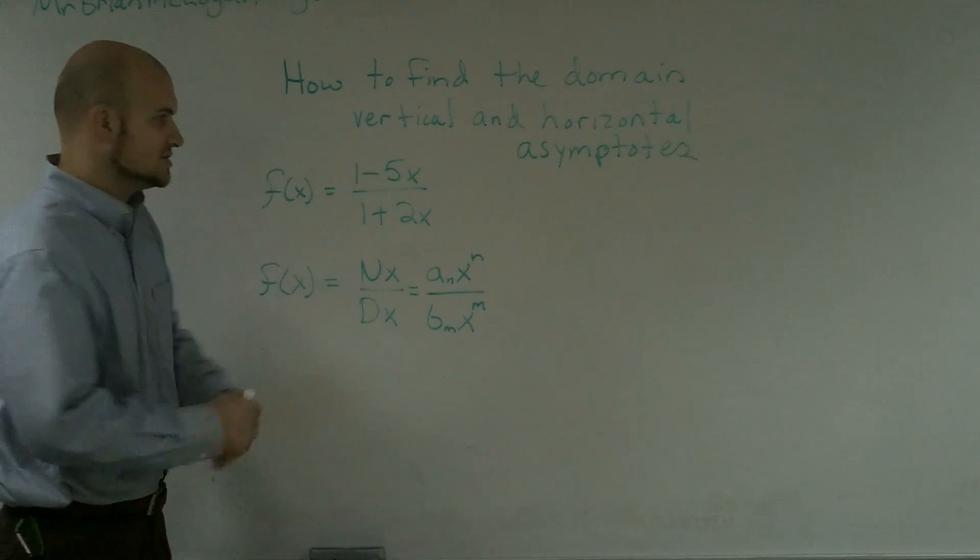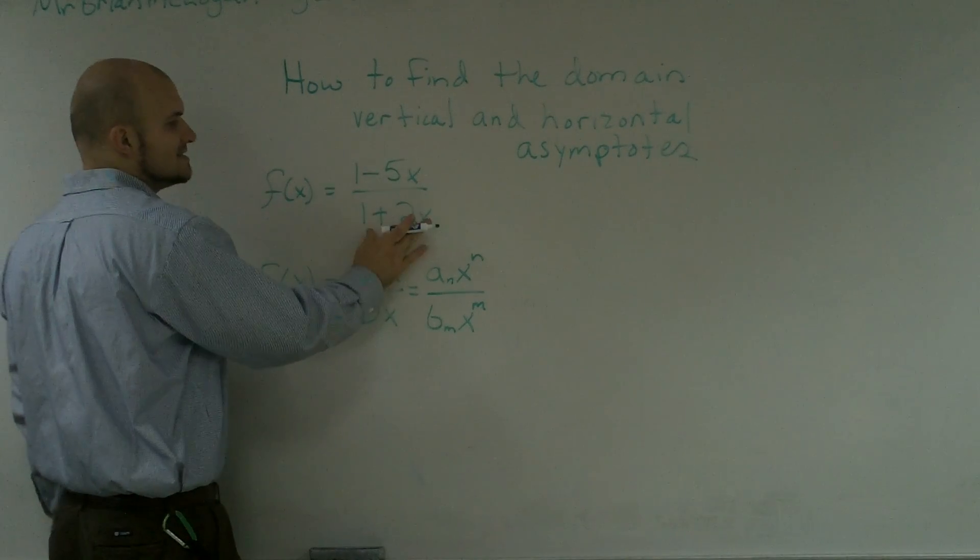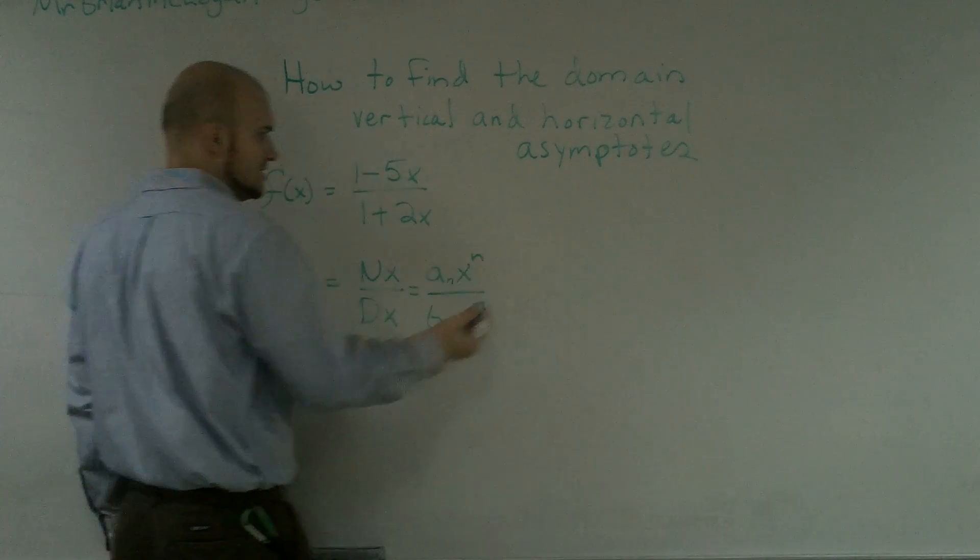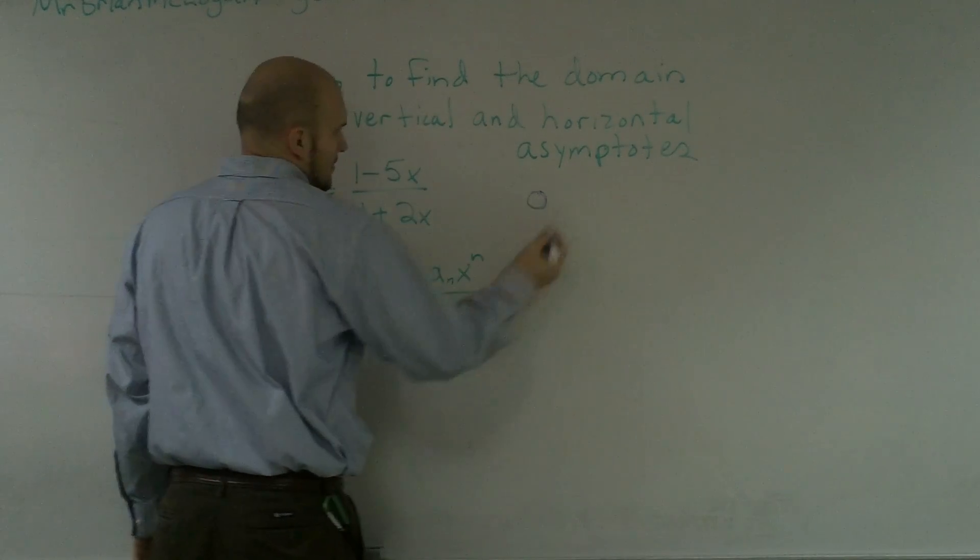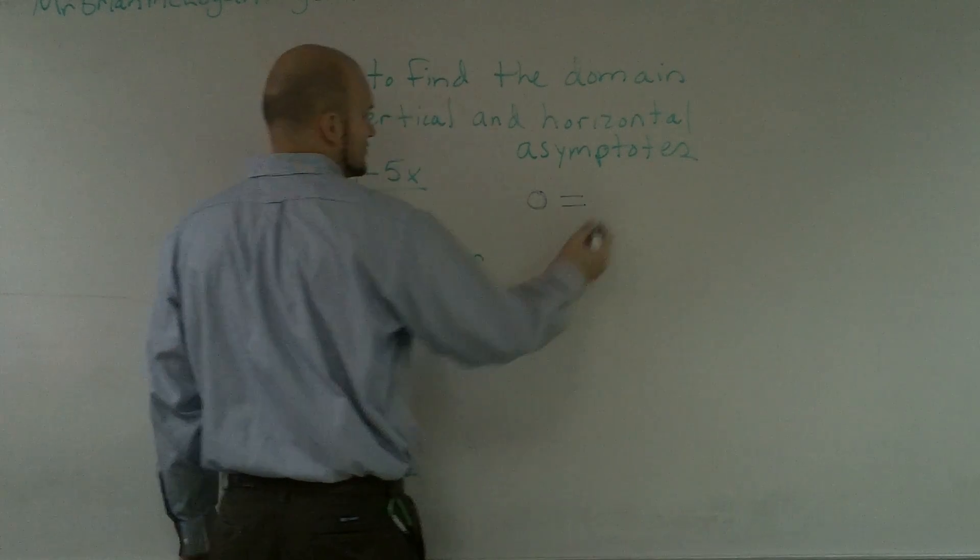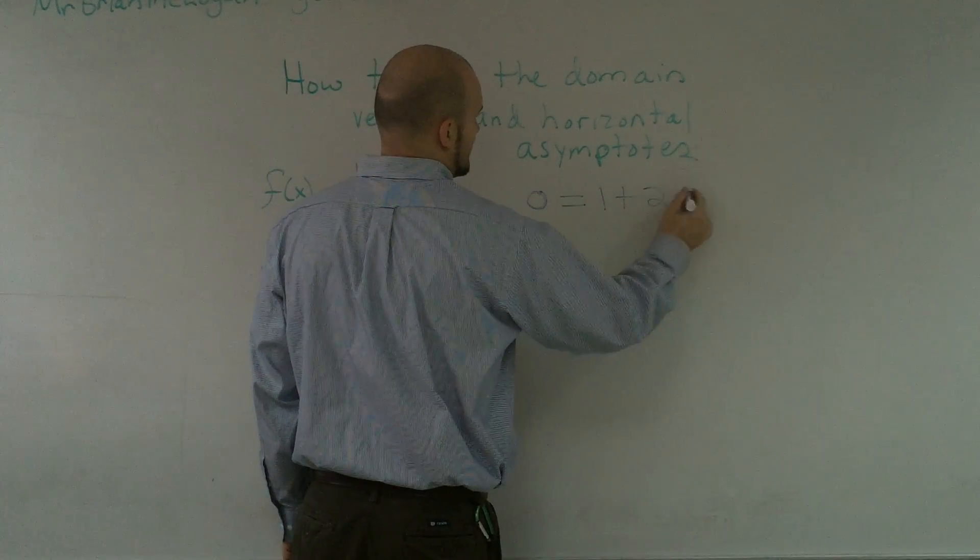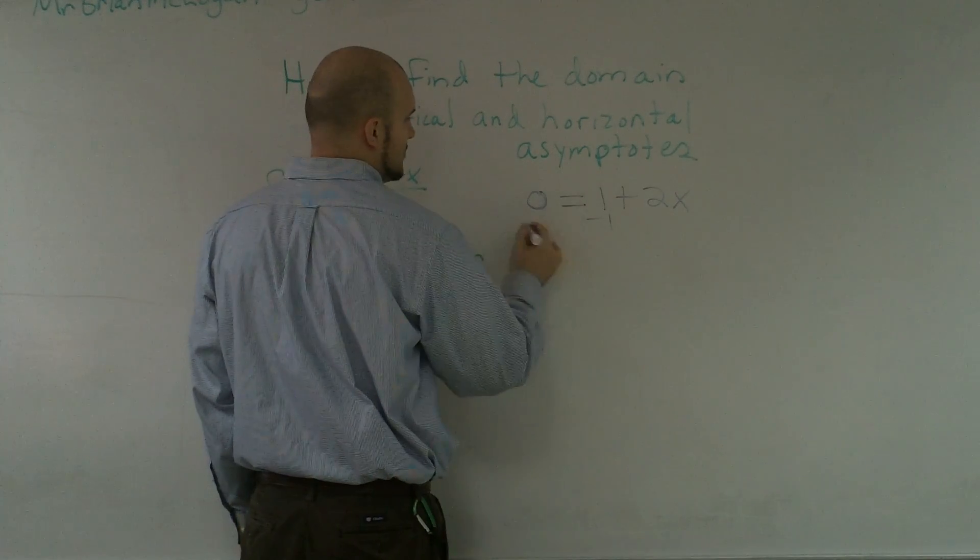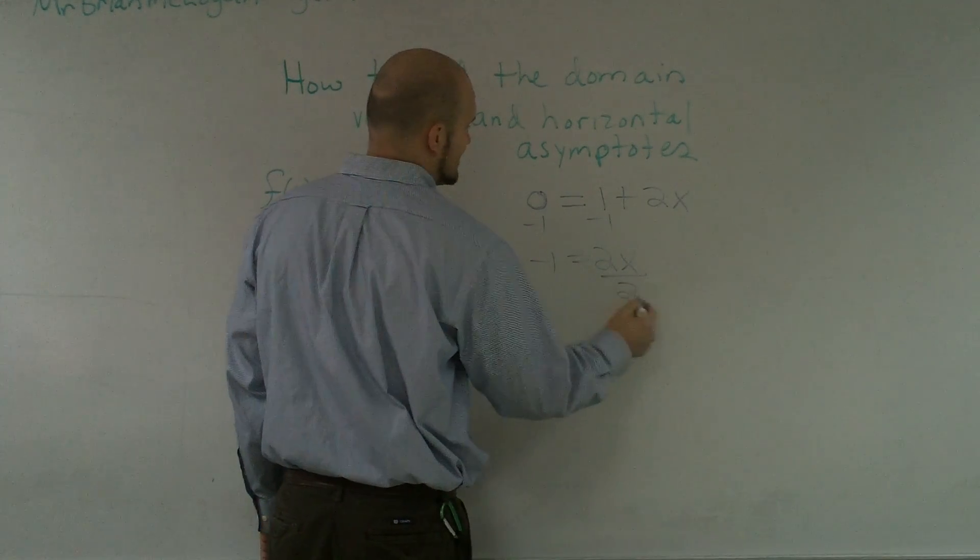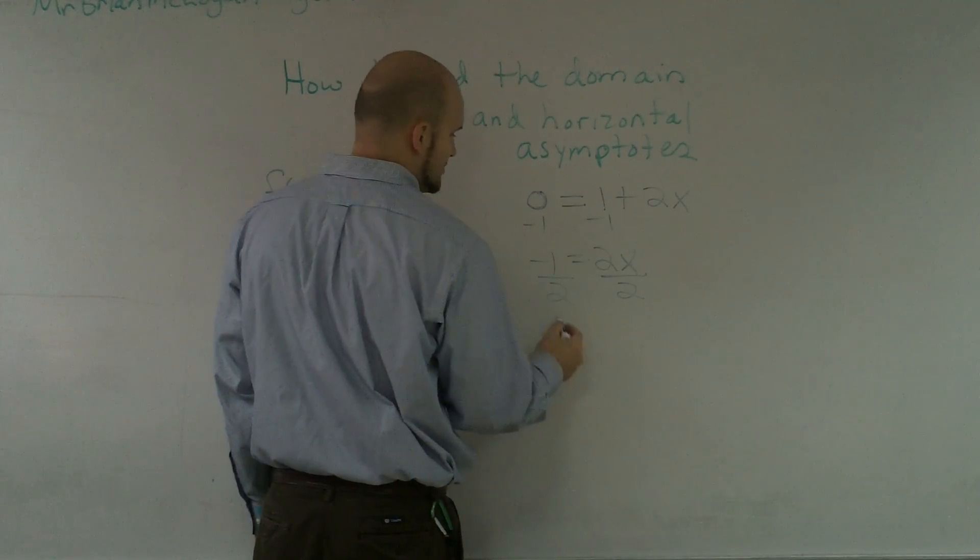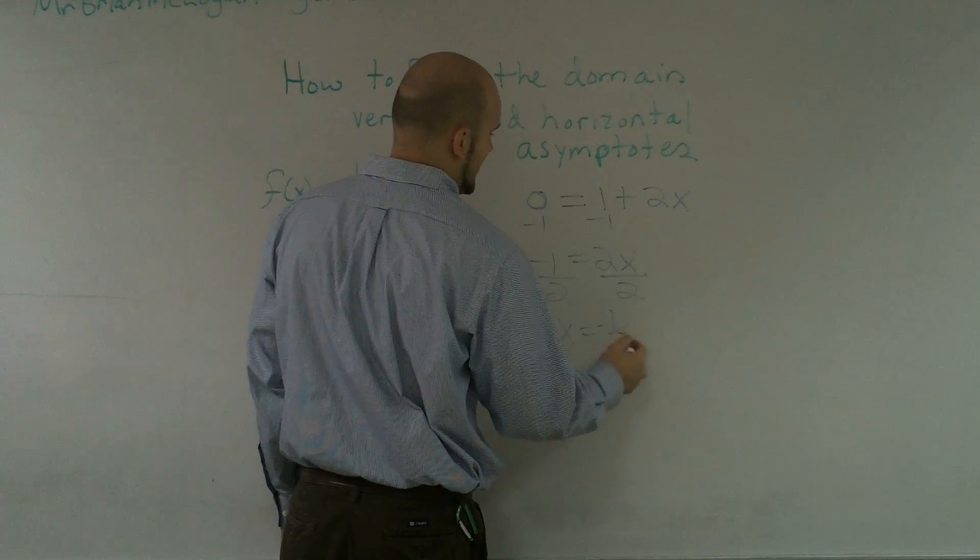To find the domain of a function, we set our denominator equal to zero. So I have 0 equals 1 plus 2x. I subtract 1, therefore negative 1 equals 2x. Divide by 2, x equals negative 1/2.